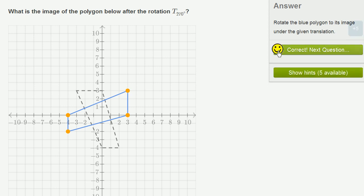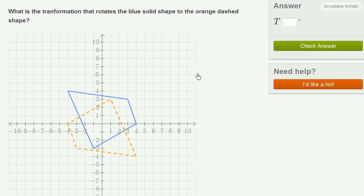Let's do a couple more of these. What is the transformation that rotates the blue solid shape to the orange dashed shape? Now this one's a little bit, we don't have the manipulative here to help us answer that question. So this is really going to challenge our powers of visualization.